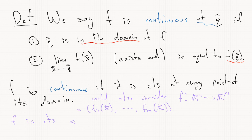Then f is continuous if and only if each f1 through fm are all continuous. So a function with multiple outputs is continuous if and only if each output slot is continuous.